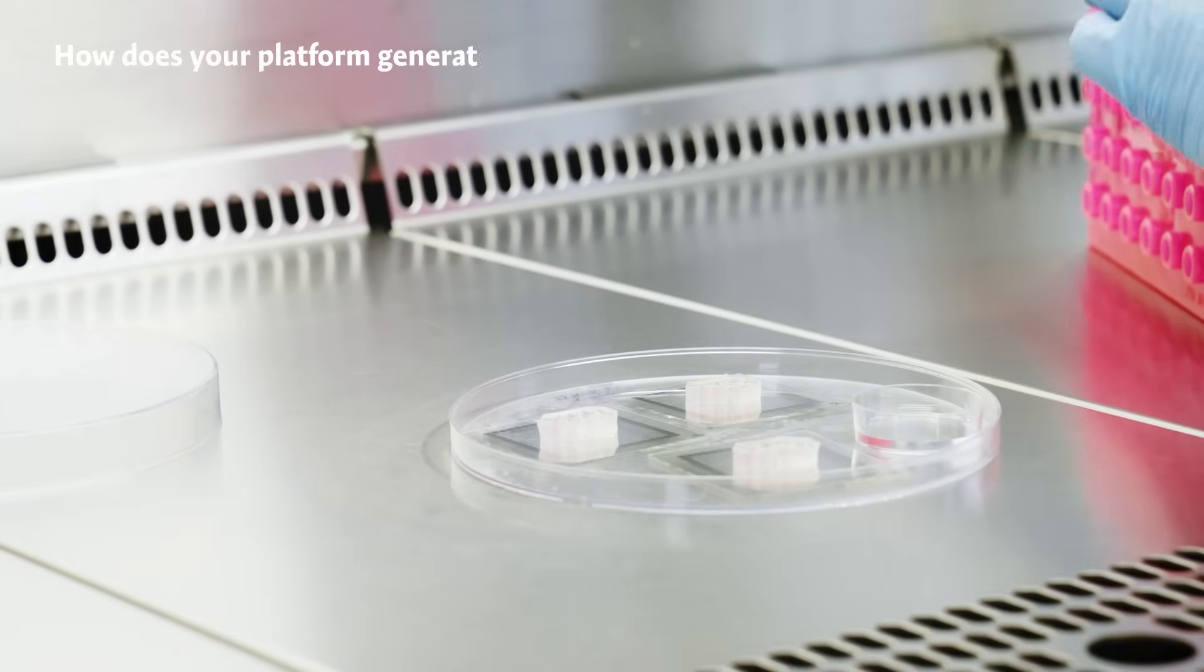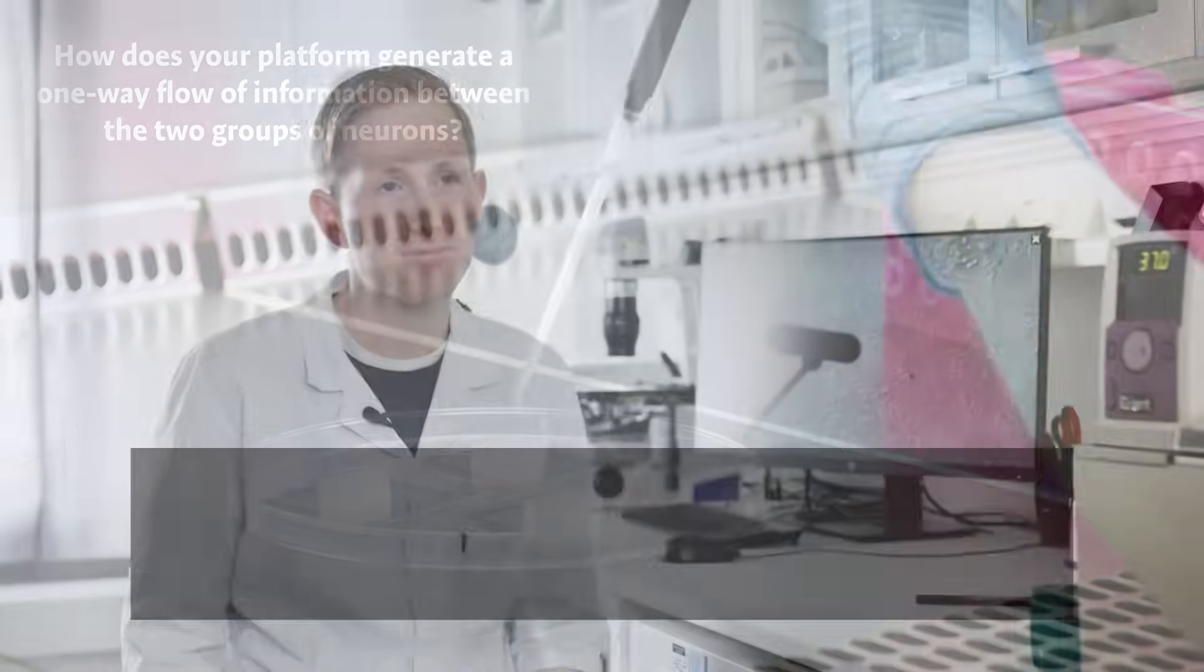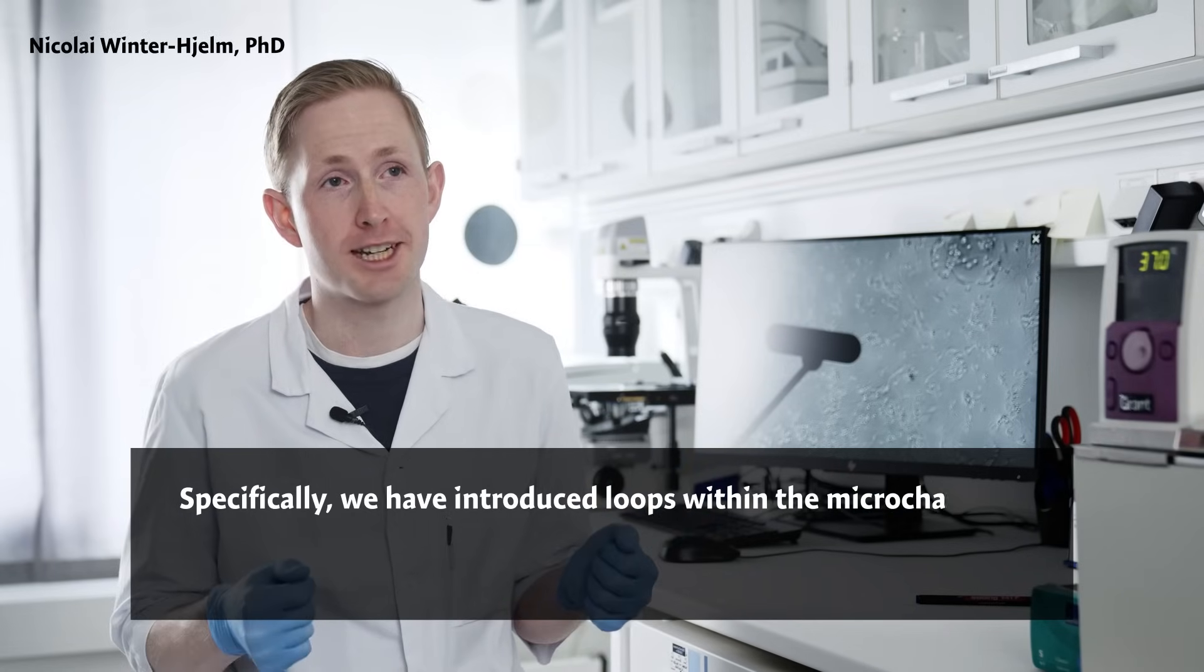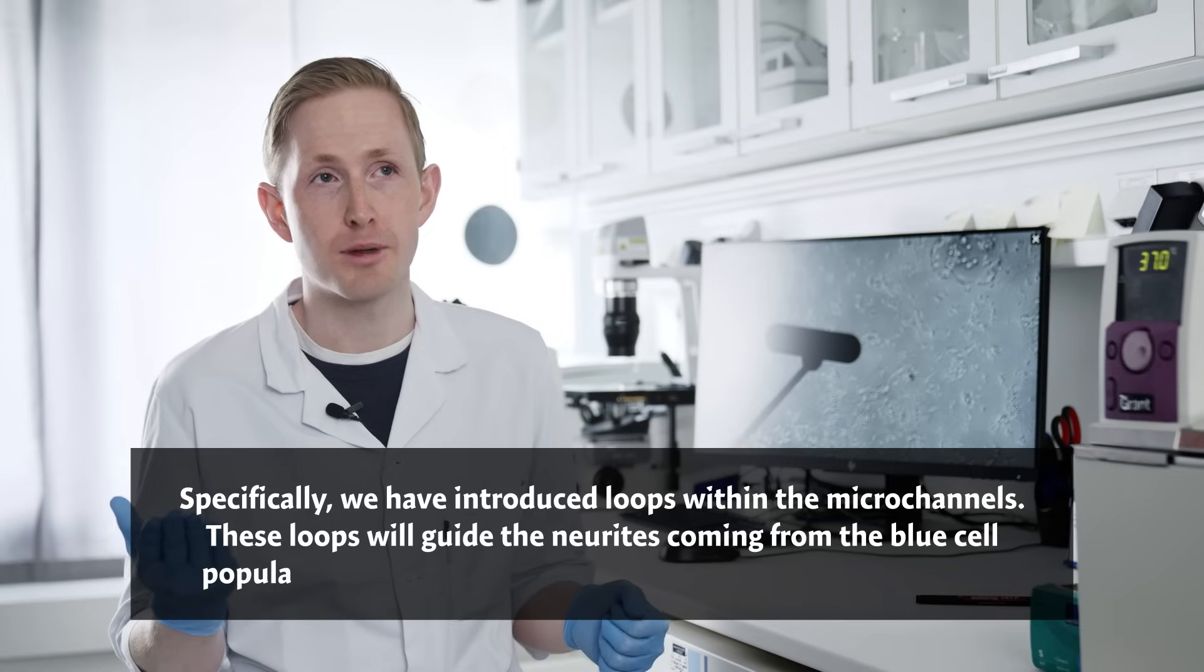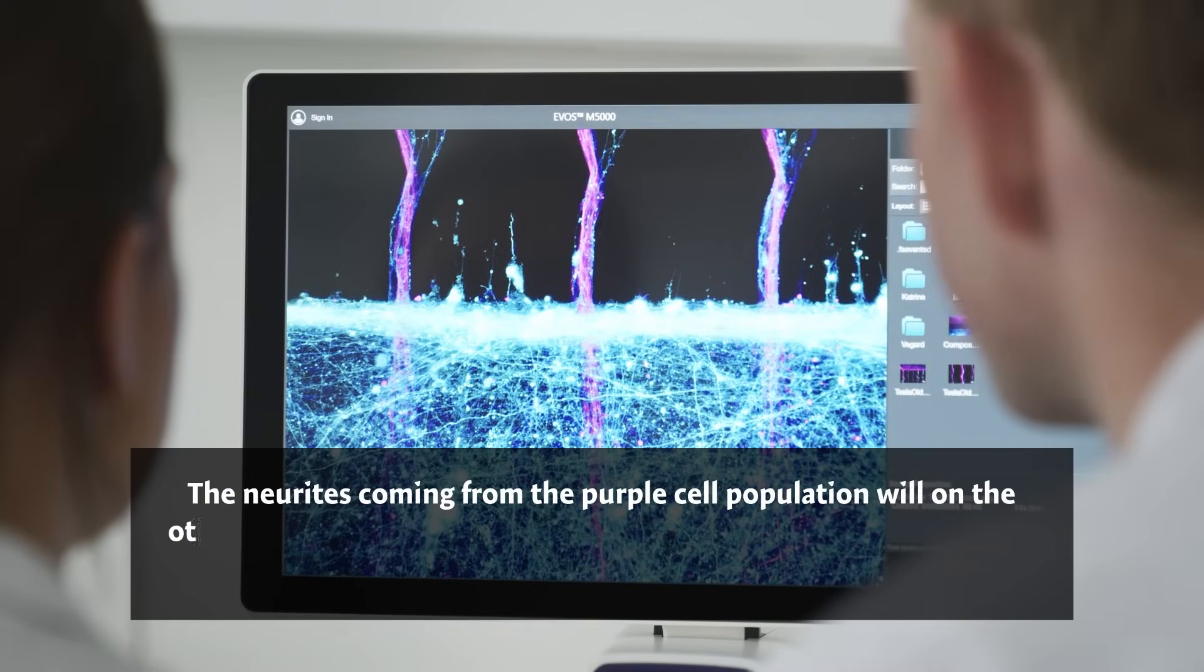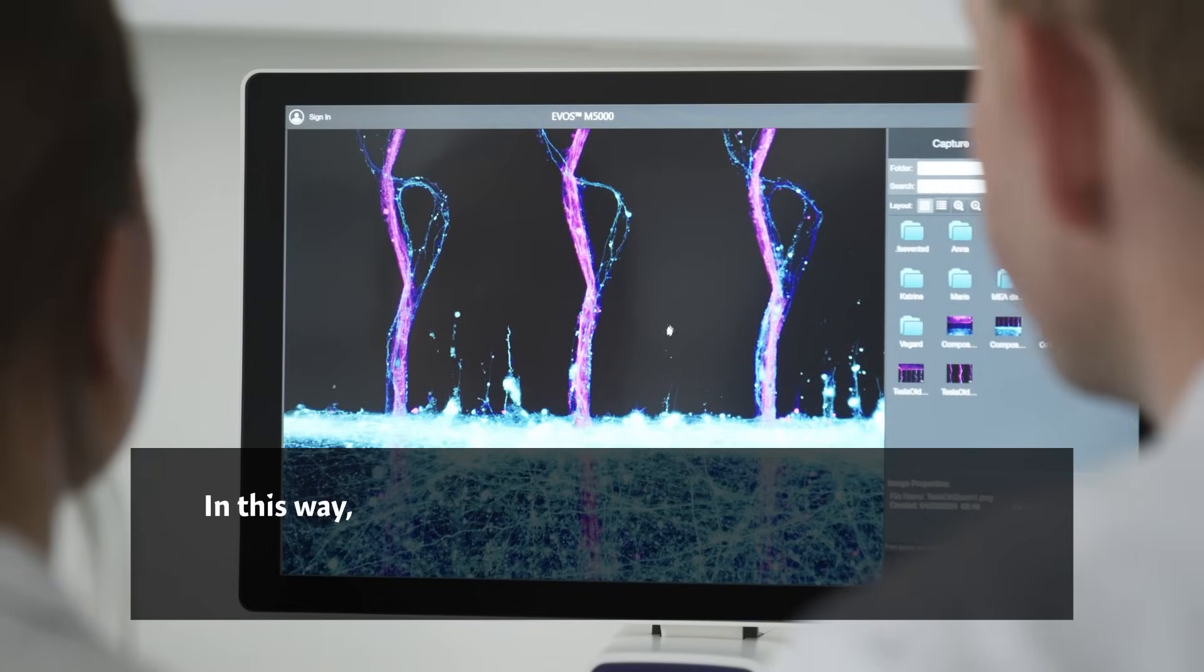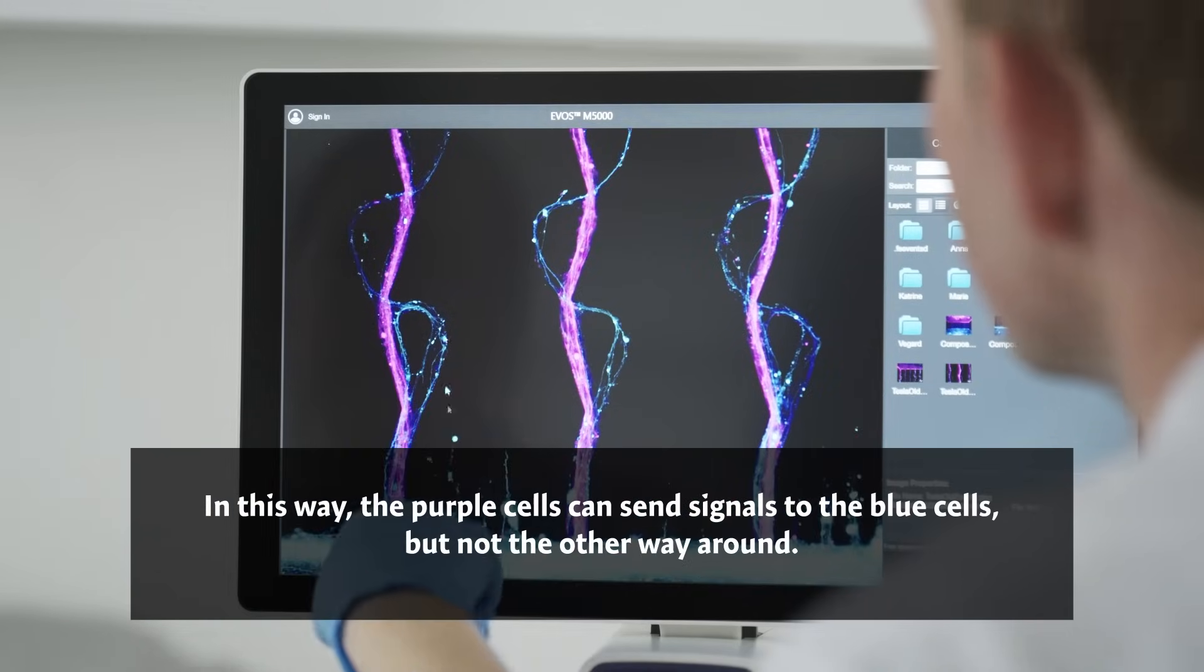How does your platform generate a one-way flow of information between the two groups of neurons? Specifically, we have introduced loops within the microchannels. These loops will guide the neurites coming from the blue cell population back to the chamber from which they originated. The neurites coming from the purple cell population will, on the other hand, be guided all the way through the channels to connect with the blue cells. In this way, the purple cells can send signals to the blue cells, but not the other way around.